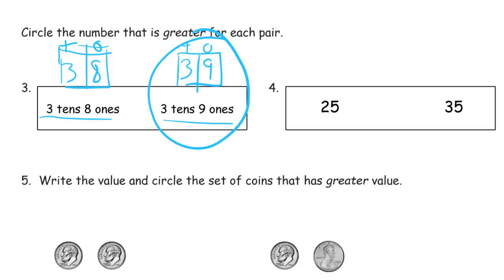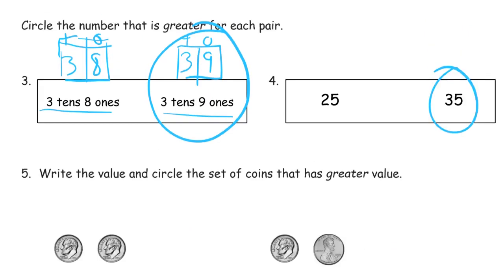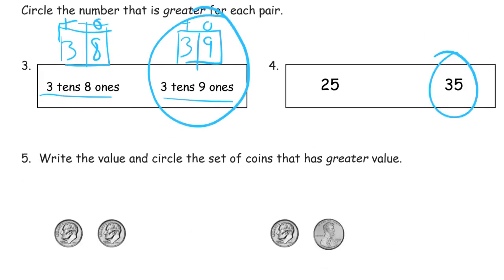25 and 35, these are already in regular form and I know that 35 is greater. You could draw a picture of that too if you wanted to. That's 3 10s, 1, 2, 3, and 1, 2, 3, 4, 5. You can just see that it's got more 10s, so it has to be greater.